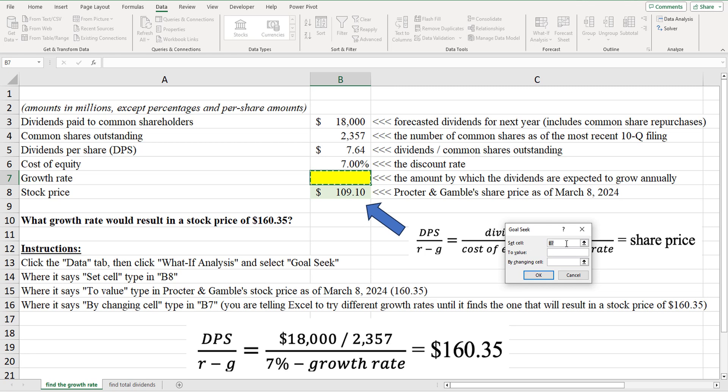So now when it says set cell, what you do is cell B8. And then we're going to set that to the share price, 160.35 by changing the cell. And that cell that we're going to change is this cell right here. Okay. The growth rate. And I'm going to click okay.